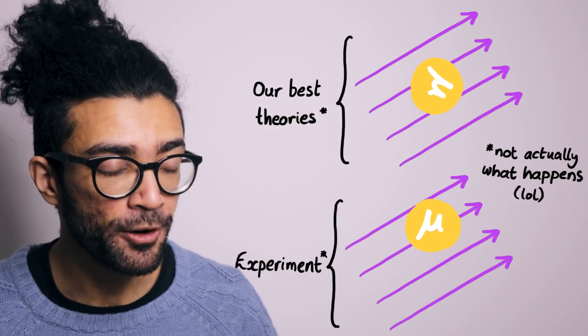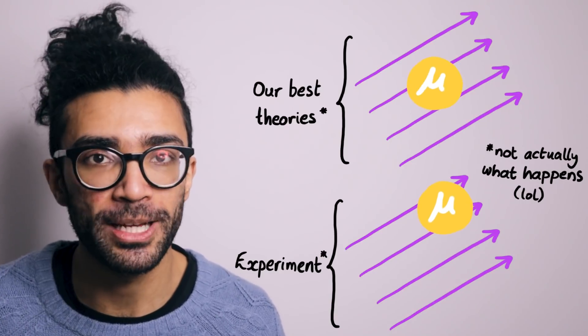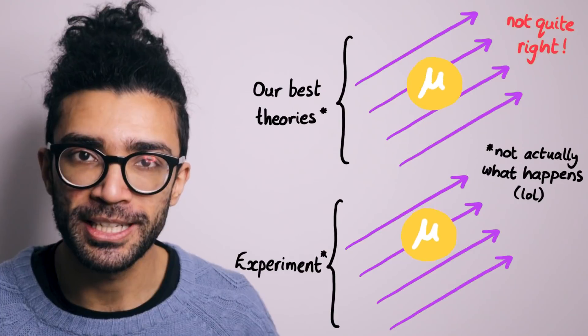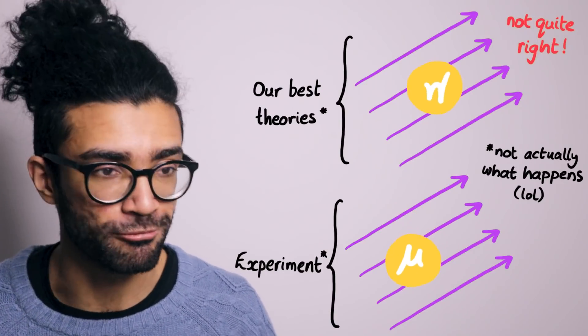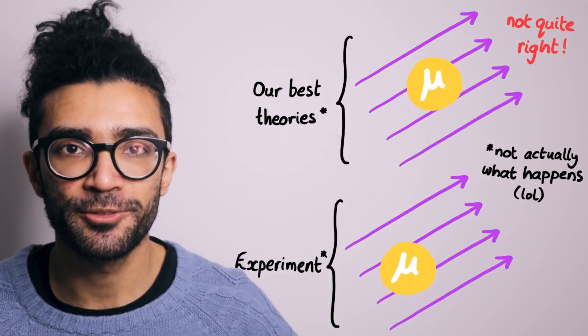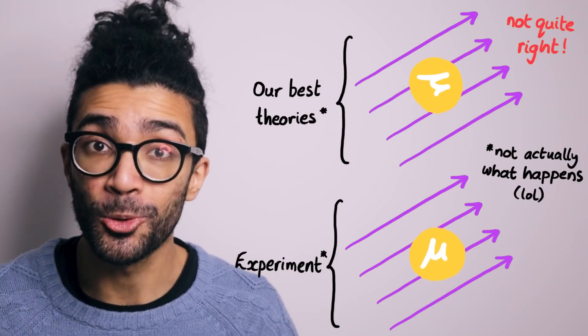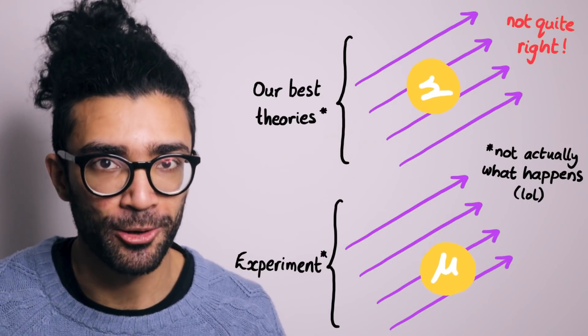The idea is that if our experiments show behavior that is quite far from what we expect from our theoretical understanding of physics, then perhaps the theory needs to be changed in order to reflect reality. And we'll also discuss in this video exactly how far the experimental result needs to be from the theoretical prediction in order for us to justify changing our theories.